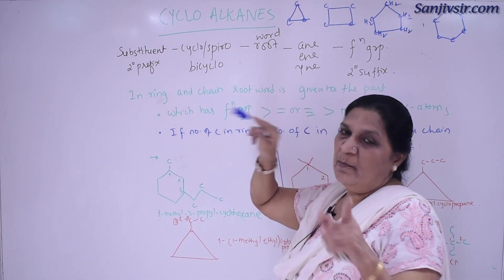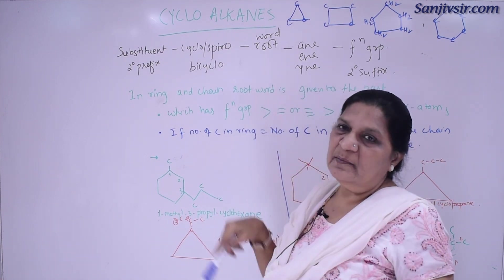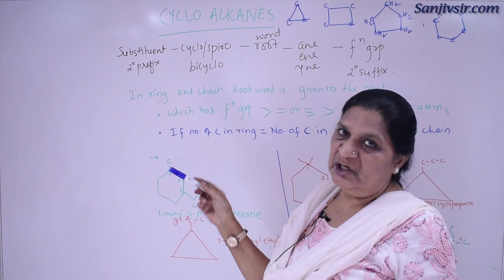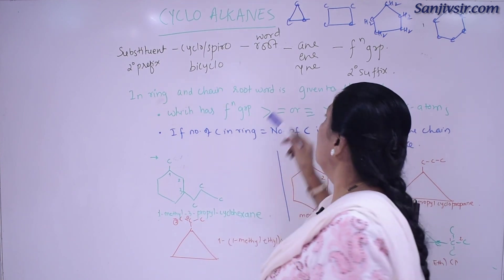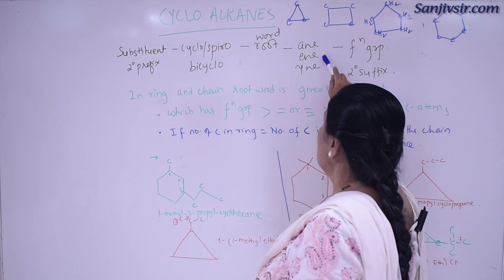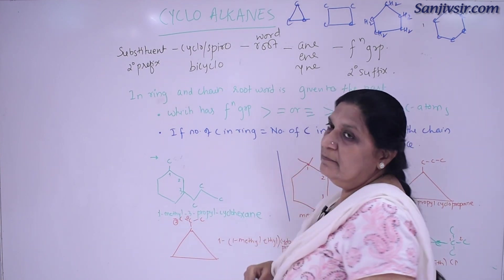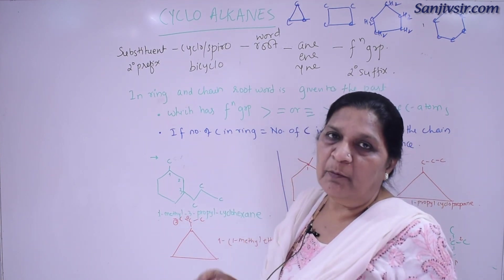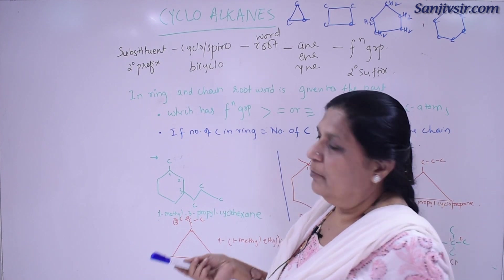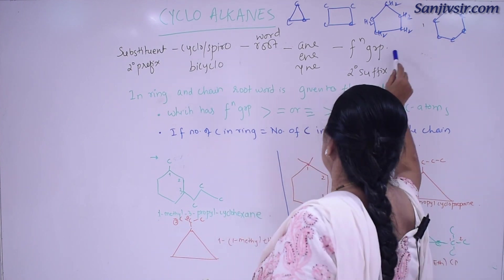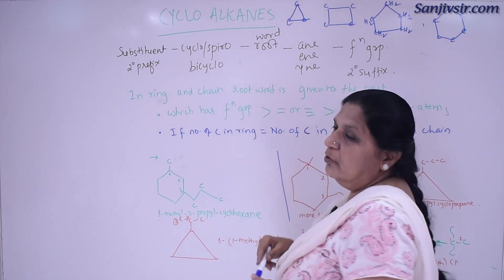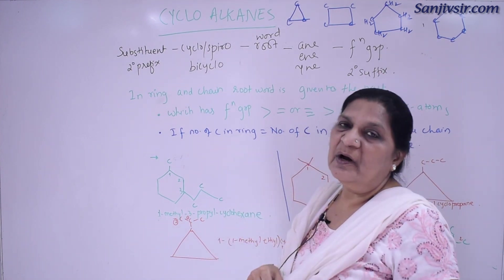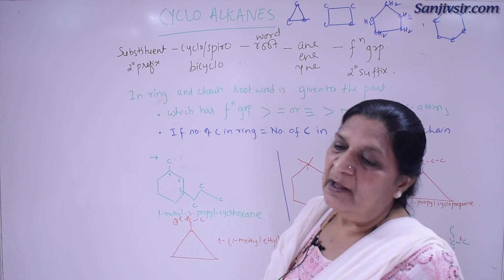Then comes the word root, which is the number of carbon atoms in the main chain. Then there is an -an/-en/-yn suffix — that is single bond, double bond, or triple bond. And then there is a functional group, which we also call the primary suffix.